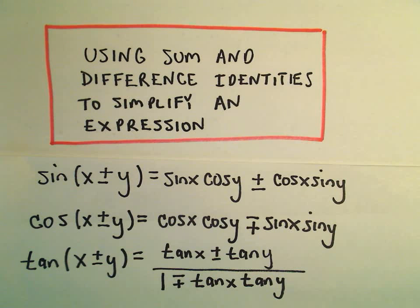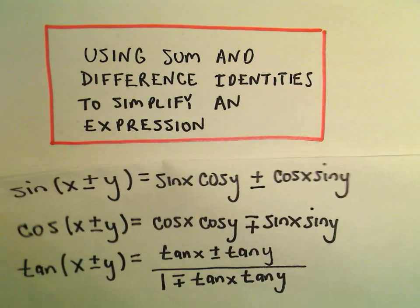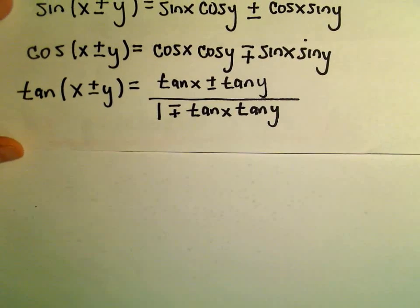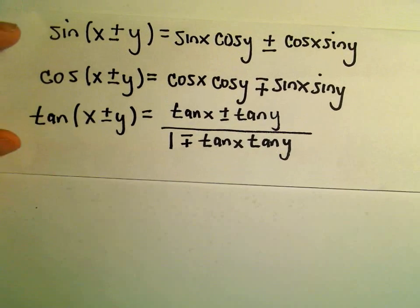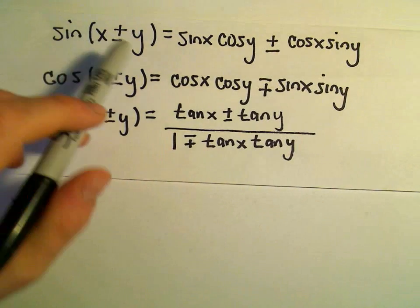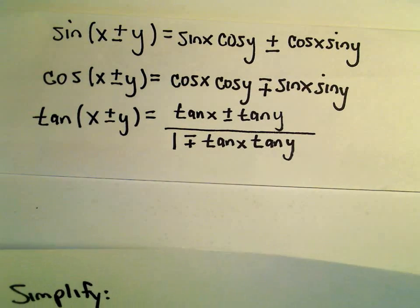All right, in this video we're going to do an example of using sum and difference identities to simplify an expression. And here are the six identities that we'll make use of. Again, each one has a positive or a negative giving you a different identity.